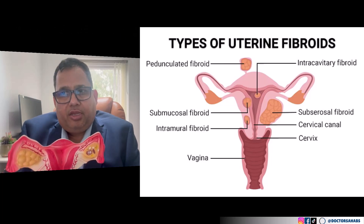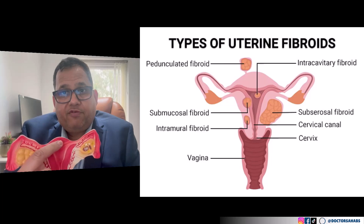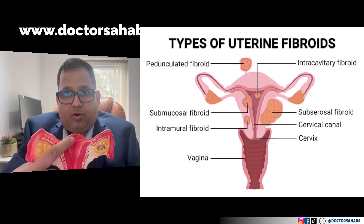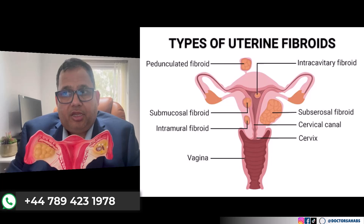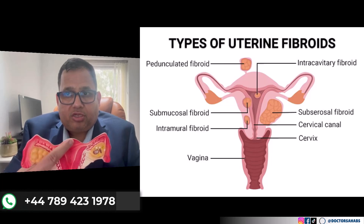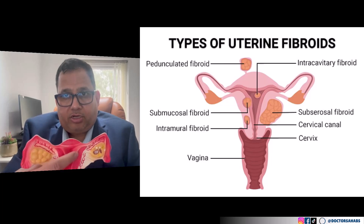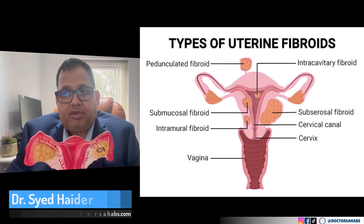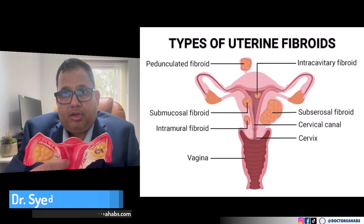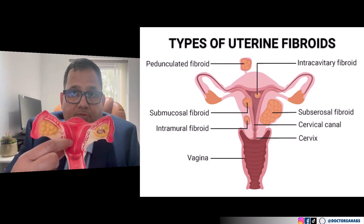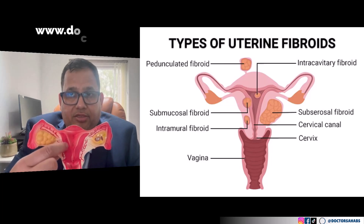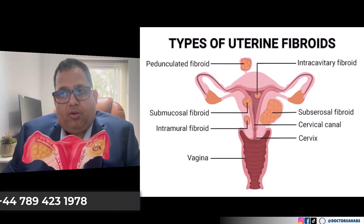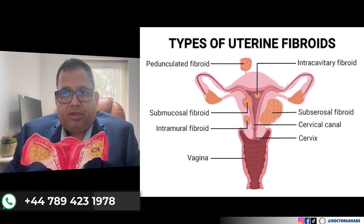There are different types of fibroids. Intramural fibroids are the most common type and develop within the muscle wall of the uterus. Subserosal fibroids develop outside the uterus. Submucosal fibroids develop just beneath the inner lining of the uterus. The majority of fibroids are intramural, developing in the muscular wall.